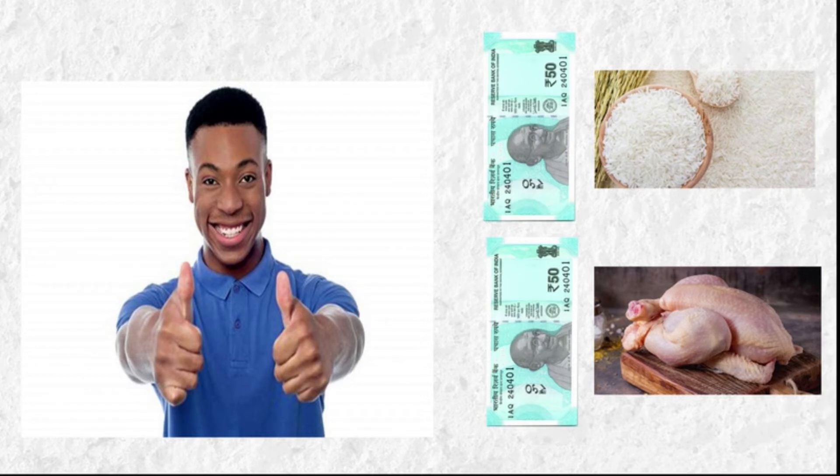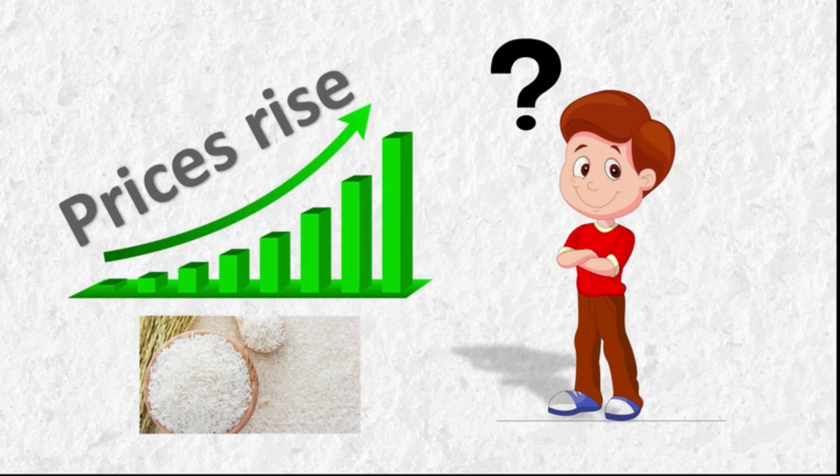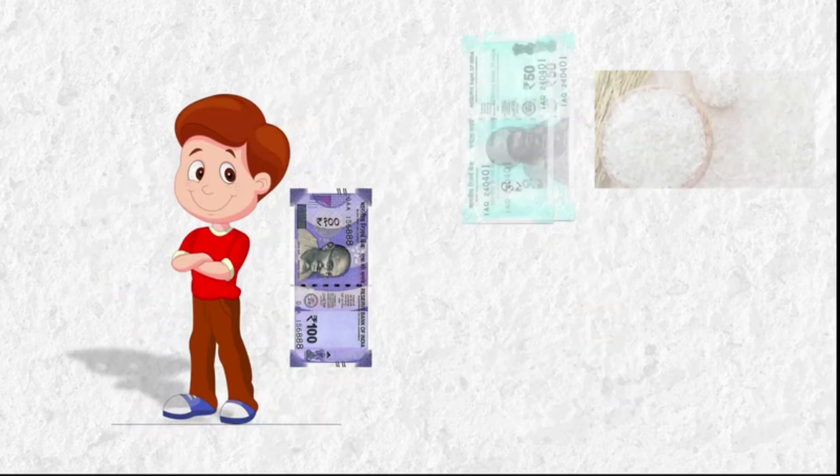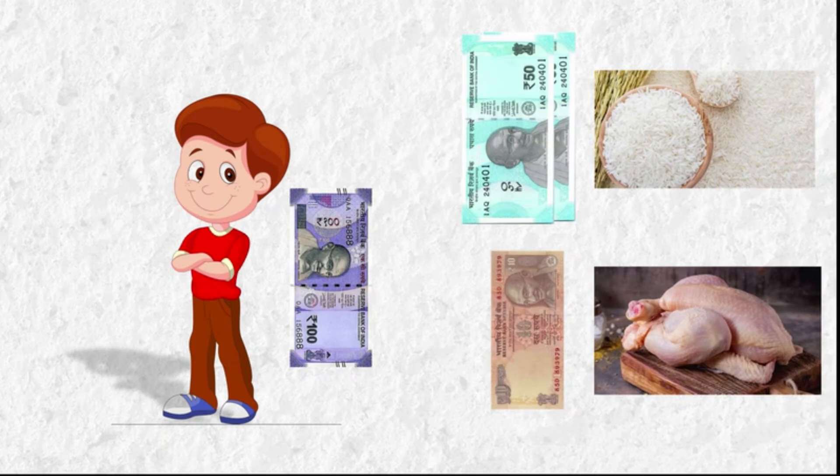But suppose the price of rice increases. Then what would Rajiv do? Definitely, he is going to spend more money on rice despite high prices because rice is essential and meat is not. If he still spends more money on chicken, he can be hungry. This is what happens with essential items.